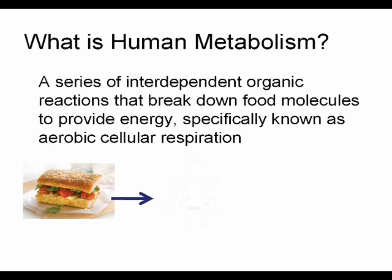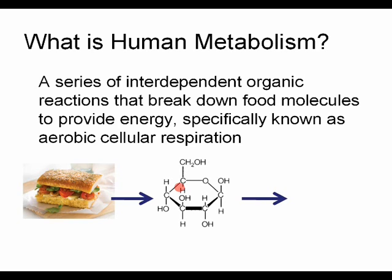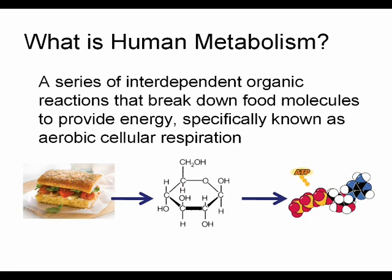We break down carbohydrates into glucose molecules, then use glucose to produce ATP. Basically, we are taking compounds with potential energy and converting it into a usable form, which is ATP. ATP is our body's energy currency.